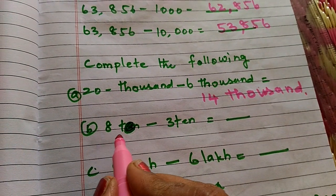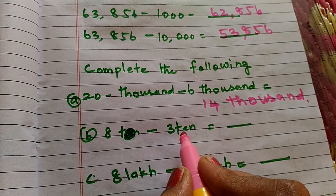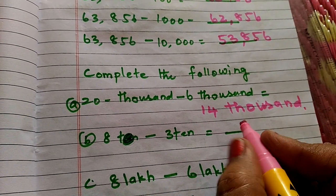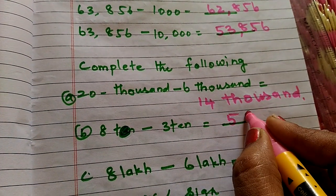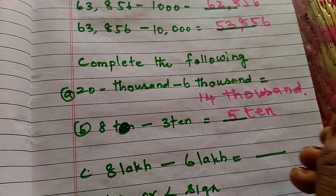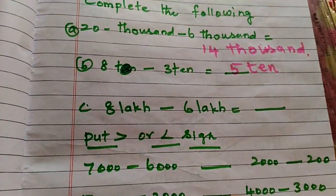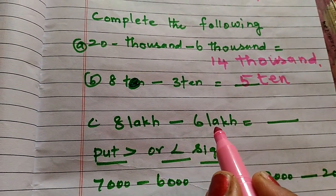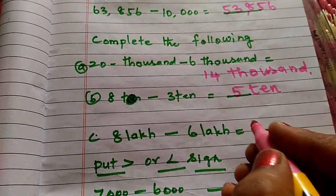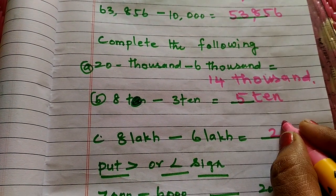Next, 8 ten minus 3 ten. Answer is 5 ten. Then 8 lakh minus 6 lakh. Answer is 2 lakh.